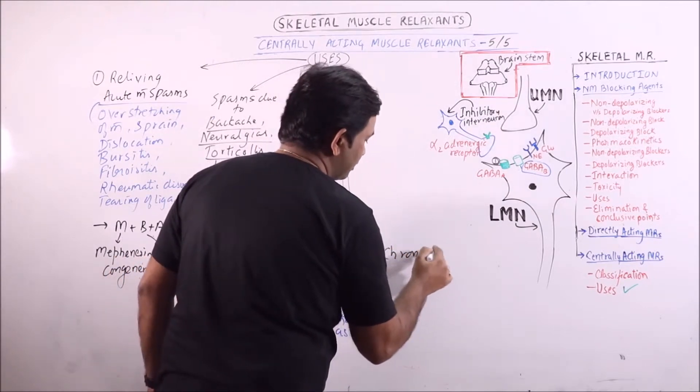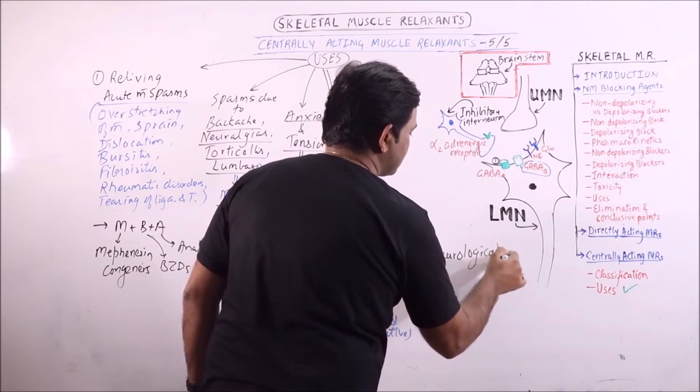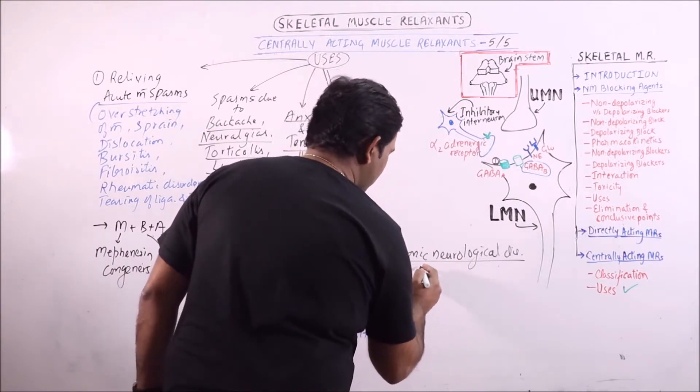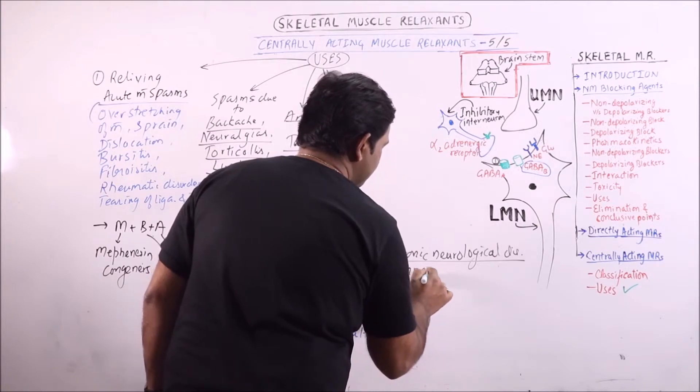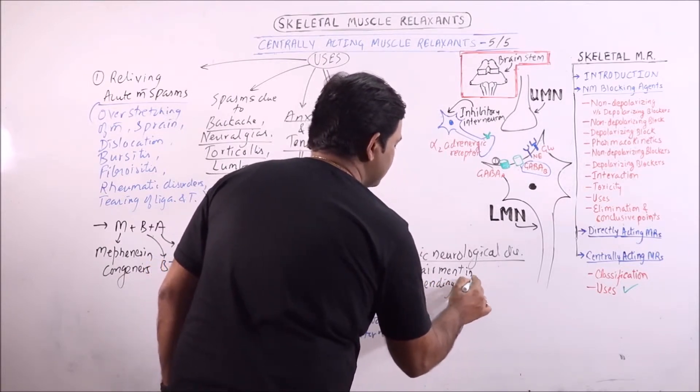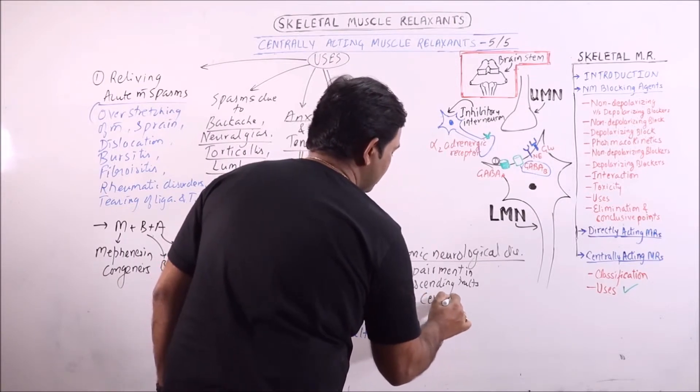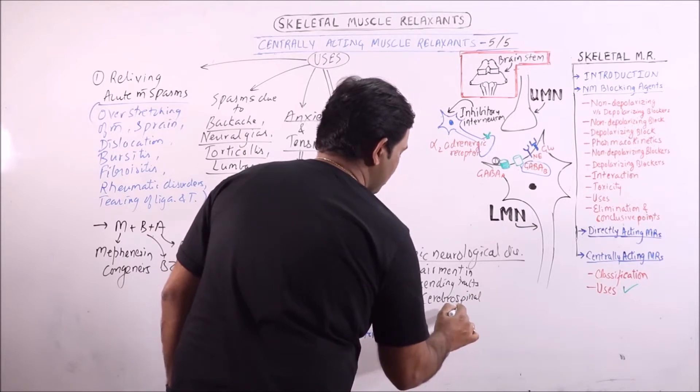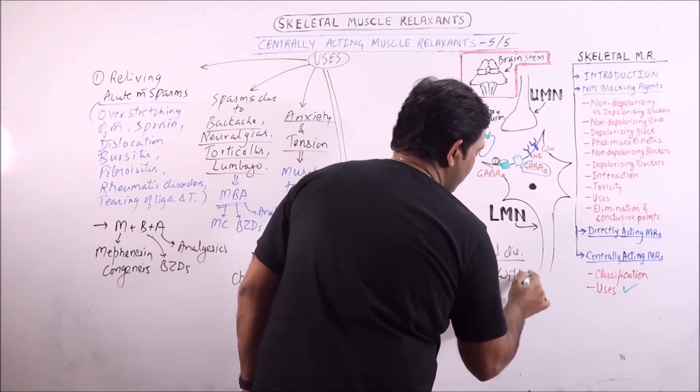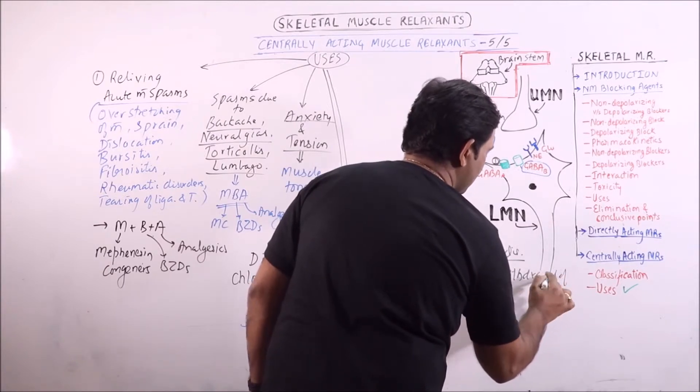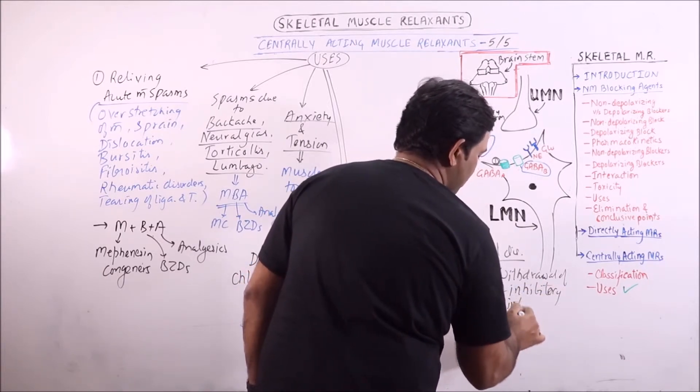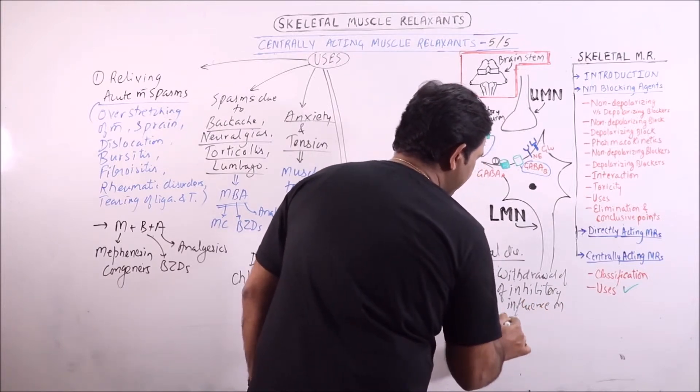In chronic neurological disorders, what happens is sometimes there is impairment in descending tracts in cerebrospinal axis or withdrawal of inhibitory influence